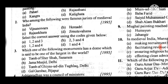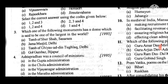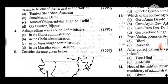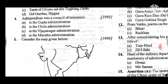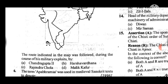Question 4: Ashta Pradhan was a council of ministers. We have to select the correct answer. Answer to question 4 is D: in the Maratha administration. Question 5 considers the map given below — the route indicated in the map was followed during the course of his military exploits by whom? Answer to question 5 is D: this was followed by Malik Kafur.